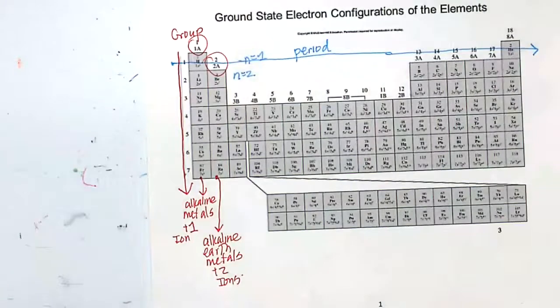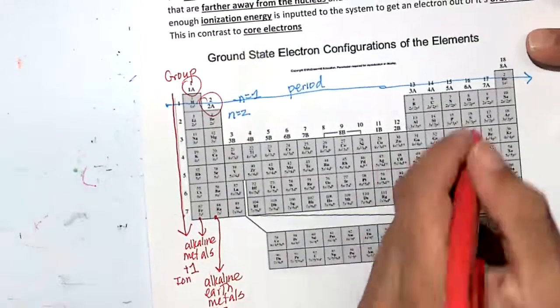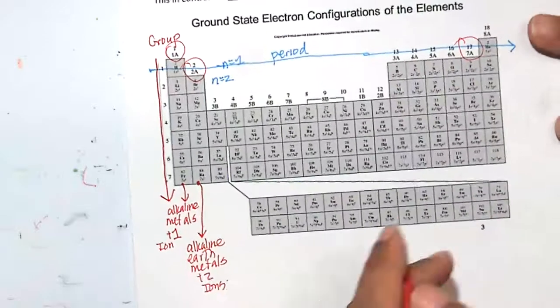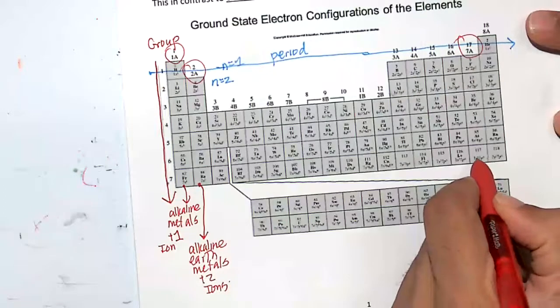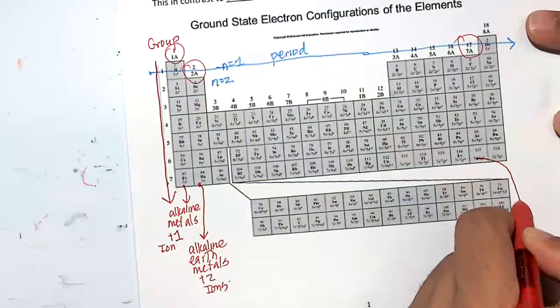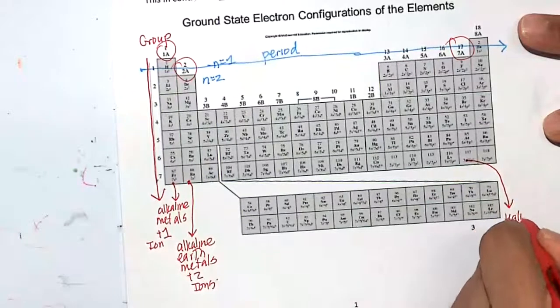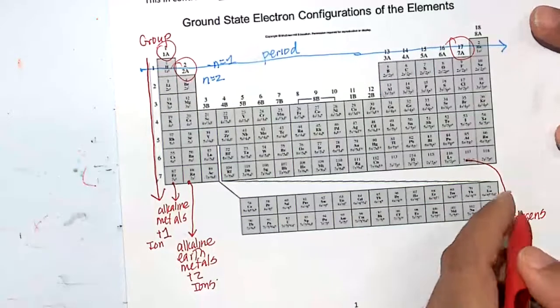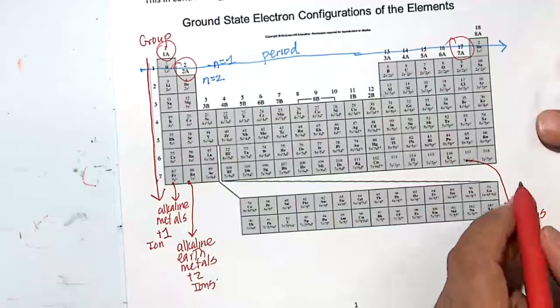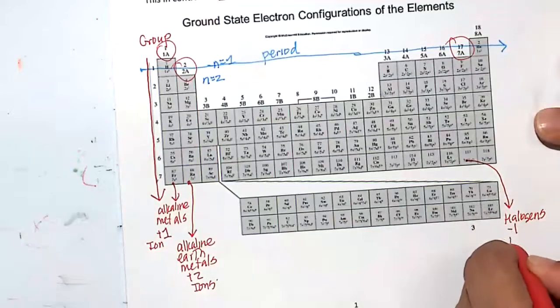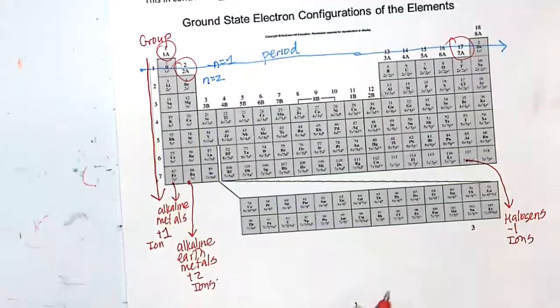Let's skip over to group 17 or 7A depending on what periodic table you're using. These are called the halogens. Anybody know what type of charge they would like to be? These will form minus one ions, nicely done.